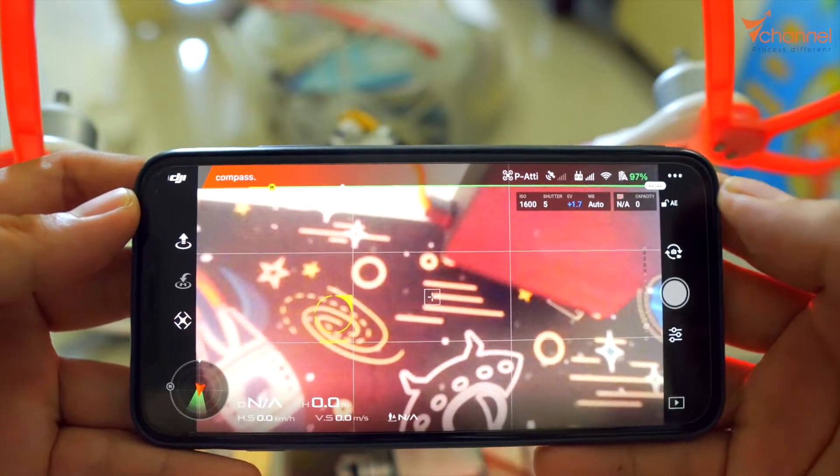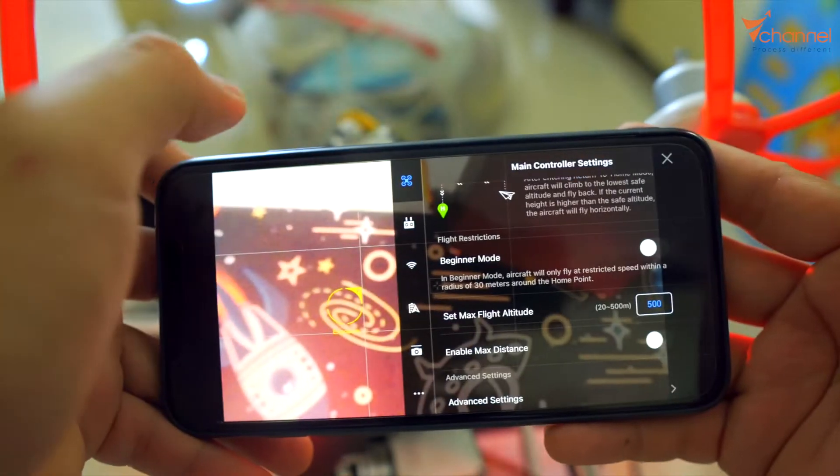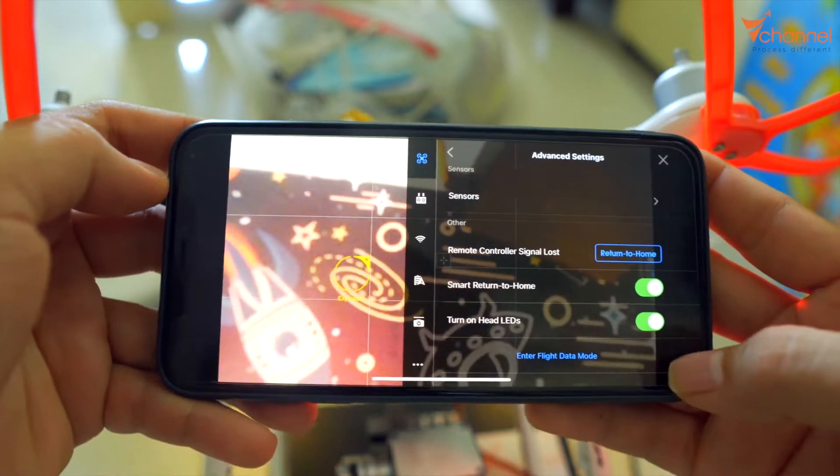Okay, right now we open DJI GO. Go to settings, drone tab, advanced settings. We can turn off this headlight from far distance.